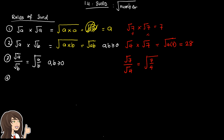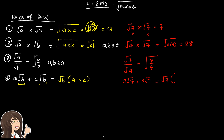Rule number 4: a√b + c√b. You can see they have the same term √b, so you factor √b to the outside and put (a + c) inside. For example, 2√7 + 3√7 = √7(2 + 3) = 5√7. When writing the final answer, put the number in front and the surd at the back.